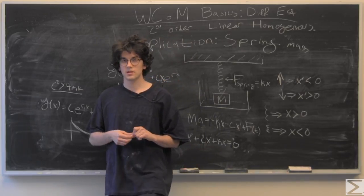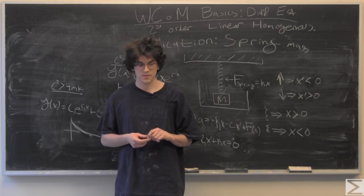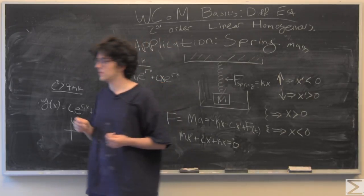Then we have the most interesting case when c squared is less than 4mk, and that is our underdamped case.